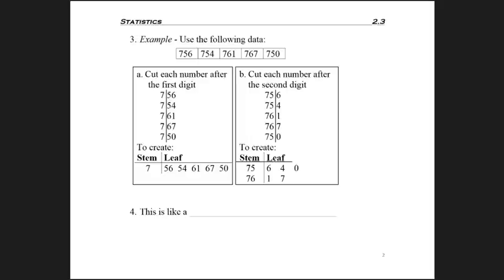So now we're going to look at two examples of making a stem and leaf. Imagine I'm told just to use this following data and make a stem and leaf. In my first example, I'm asked to cut each number after the first digit. Now I've listed them vertically and then cut them after the first digit. You could have divided everything after the first digit, in between the tens and the hundreds.